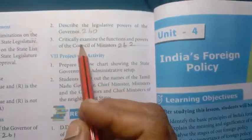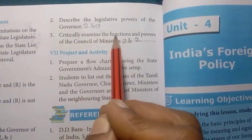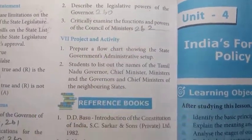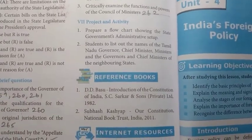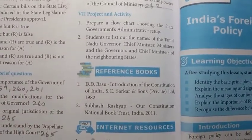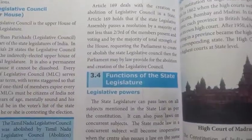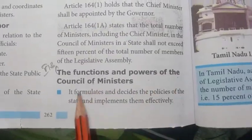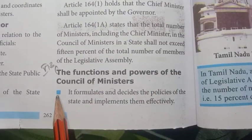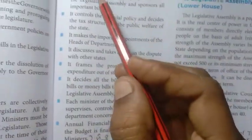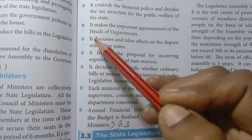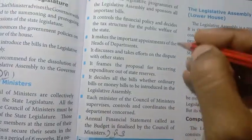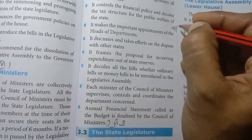Detail third question: critically examine the functions and powers of the council of ministers. Page number 262. Under the functions and powers of the council of ministers there are nine points total. Write as many points as you can based on the marks allocated.